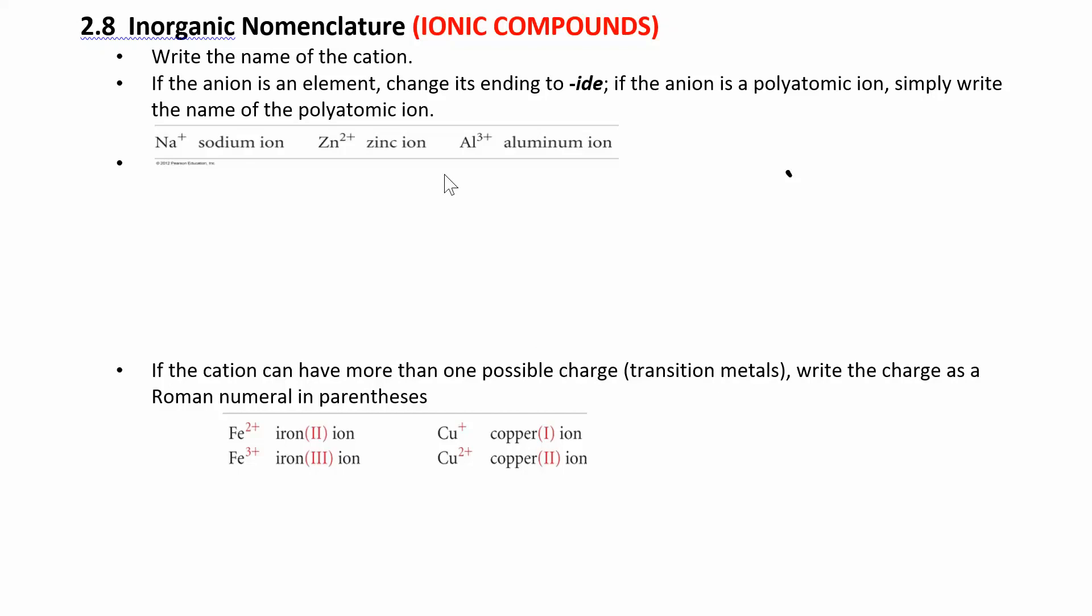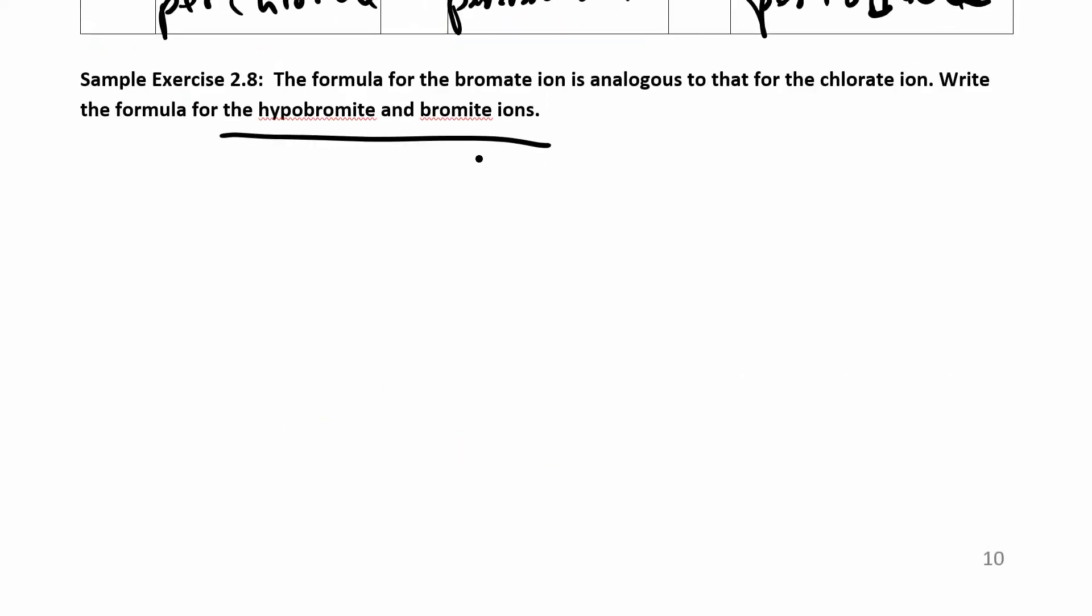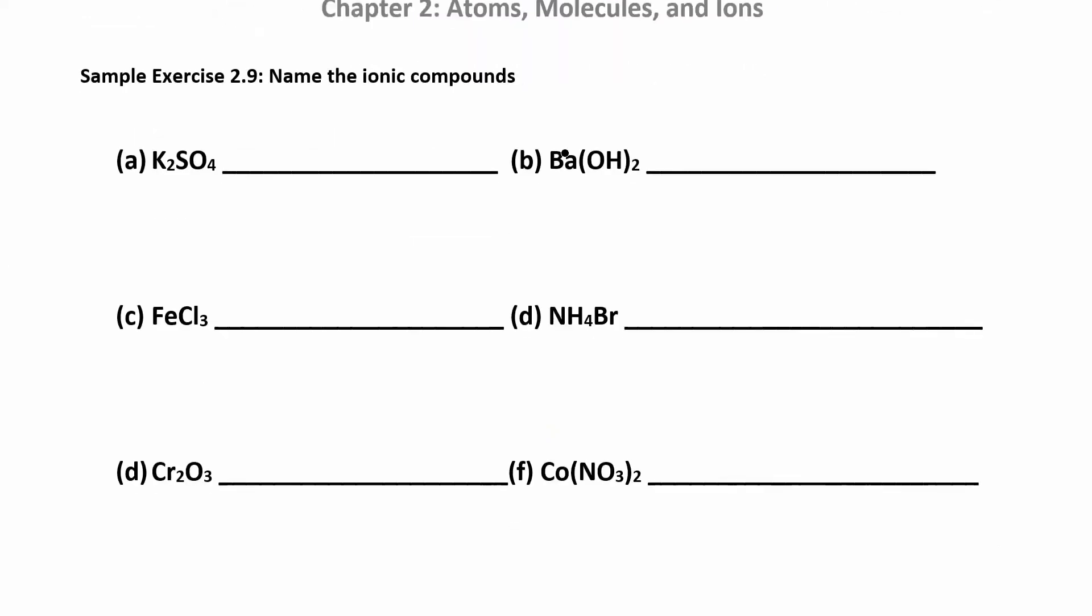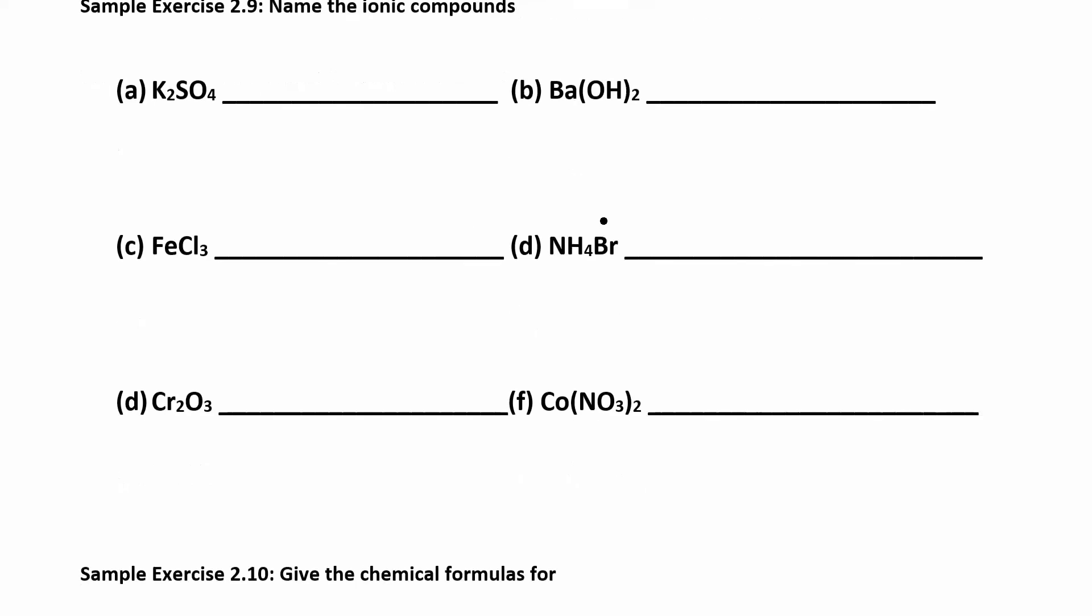Okay, chapter 2.8 or section 2.8. We're going to start naming ionic compounds. They're asking you to basically get that middle column that we just dealt with. You can take a break, pause this and try to do this yourself. I will run through the answers on how we get these.